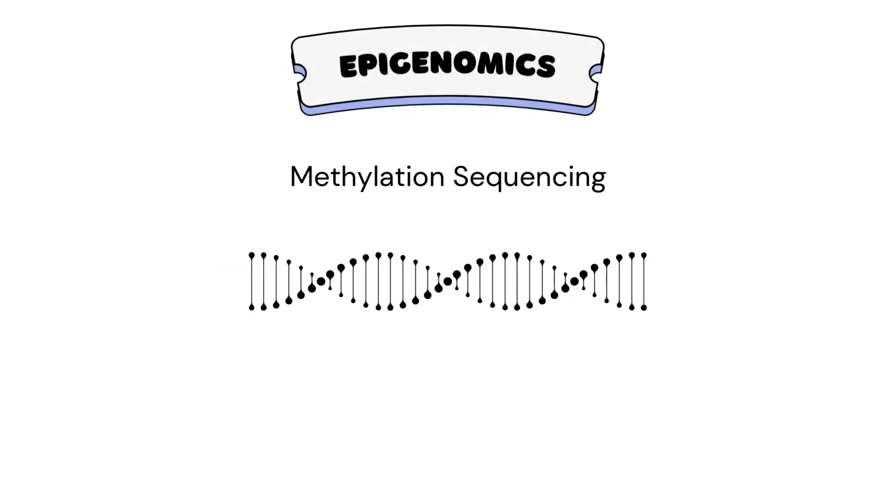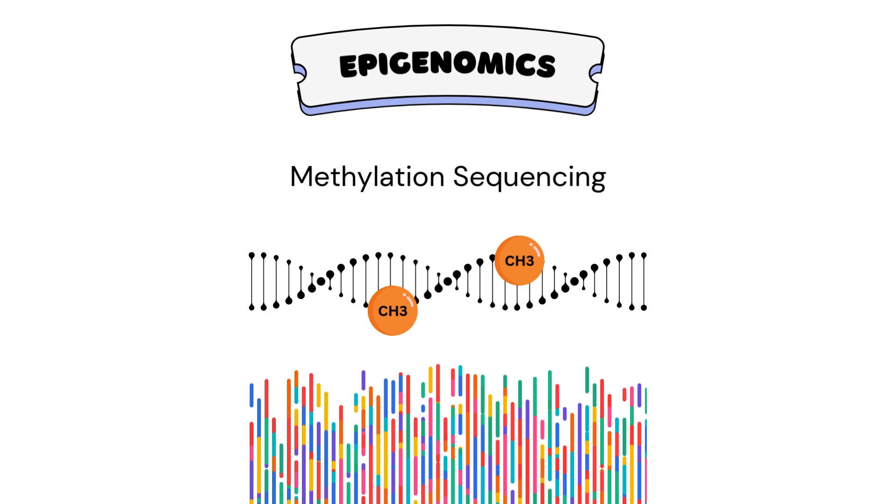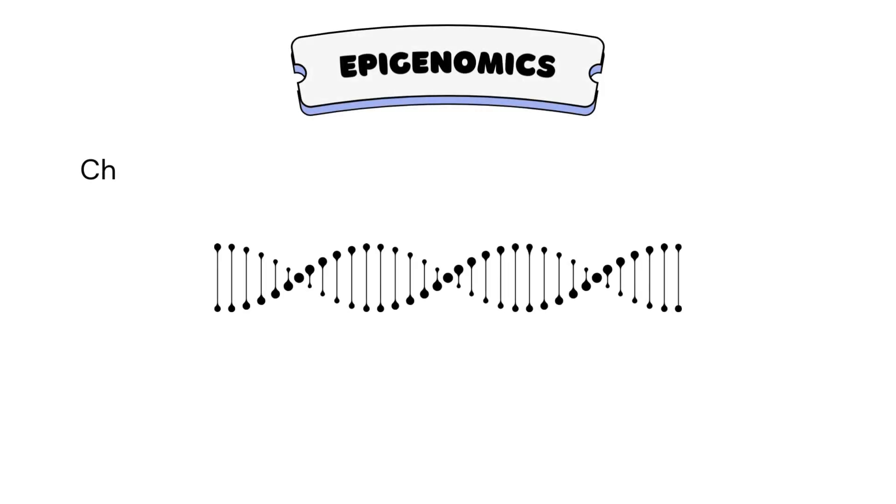One important technique for studying the epigenome is methylation sequencing, which reveals the locations of methyl groups on DNA. Another common epigenomic technique is chromatin immunoprecipitation sequencing, or ChIP-seq.